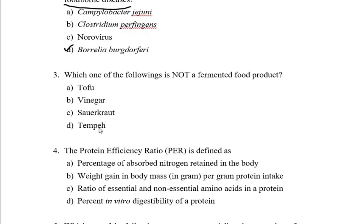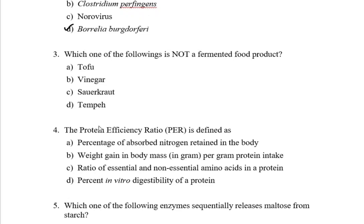Next question: which one of the following is NOT a fermented food product? Option A: tofu, option B: vinegar, option C: sauerkraut, and option D: tempeh. Tofu is a non-fermented food product produced from soybean—that is your correct answer.